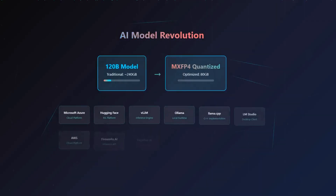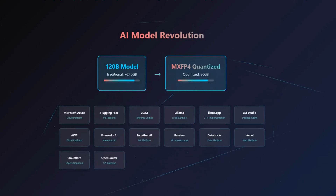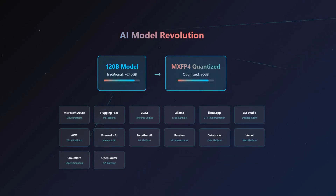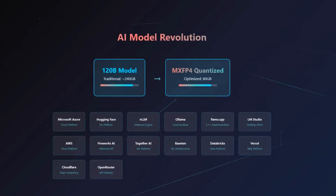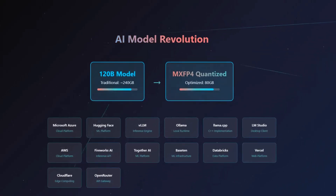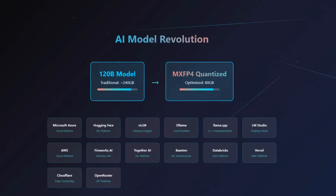It's exciting to see how this is already being adopted. The models come natively quantized in MXFP4 format, which is why the 120B model can run in 80GB of memory instead of requiring much more. They've partnered with basically everyone in the ecosystem: Azure, HuggingFace, VLLM, Ollama, Llama.cpp, LMStudio, AWS, Fireworks, Together AI, Baseten, Databricks, Vercel, Cloudflare, and OpenRouter.